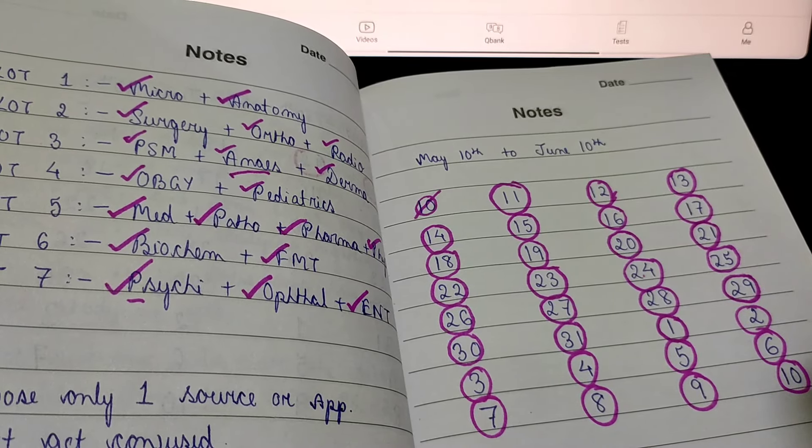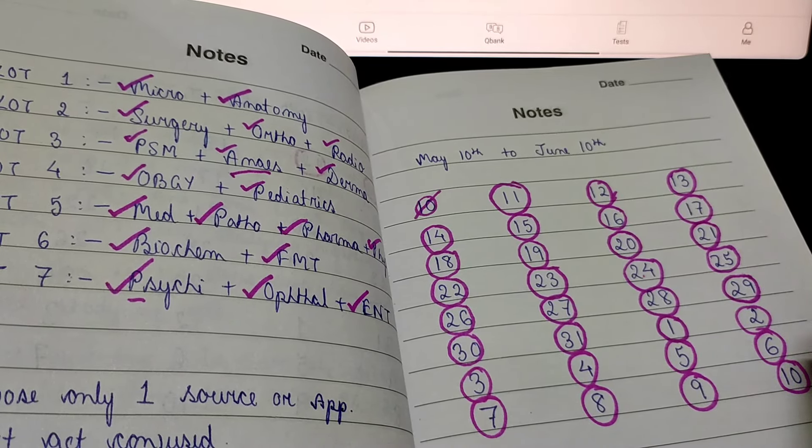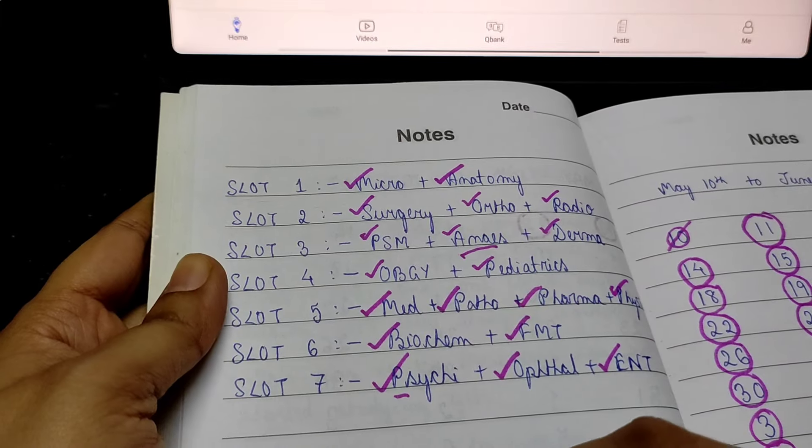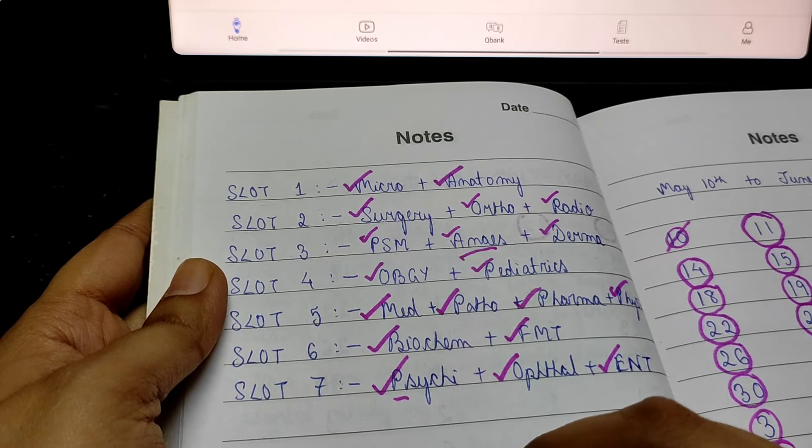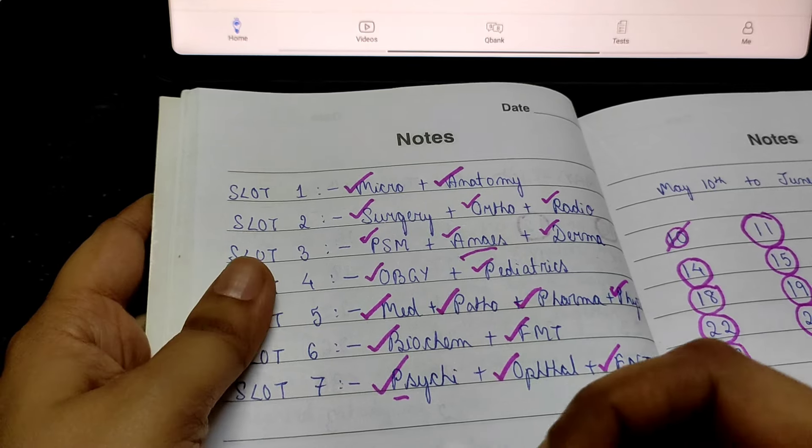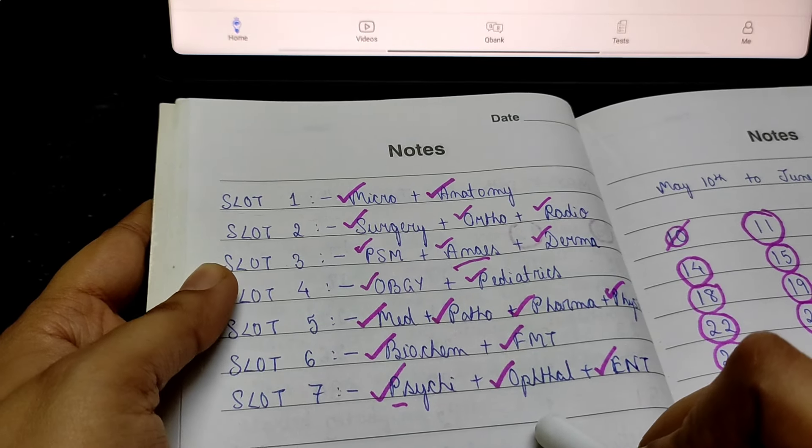We are done with the high-yield topics of all the 19 subjects. Can you believe it?